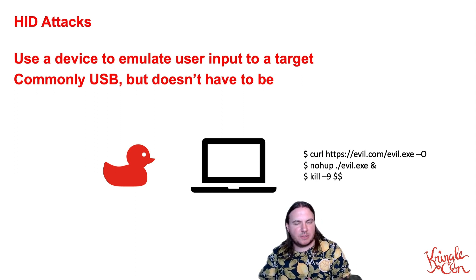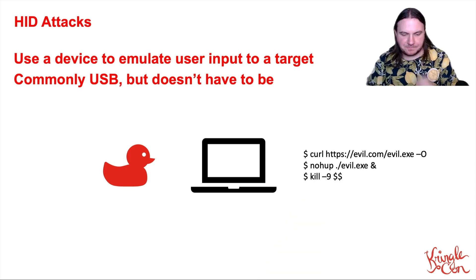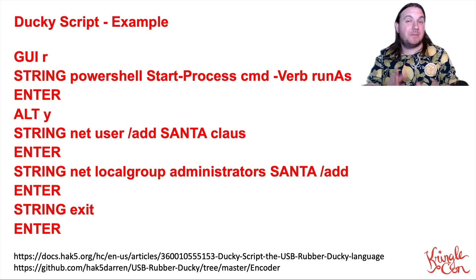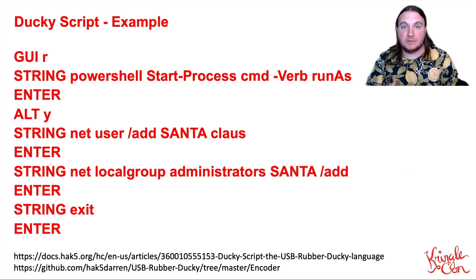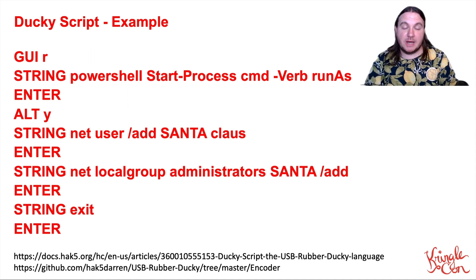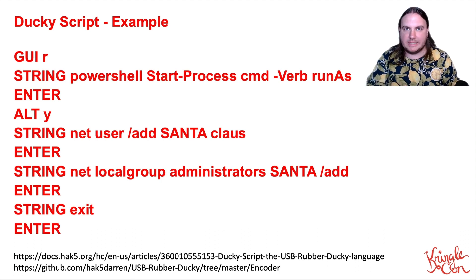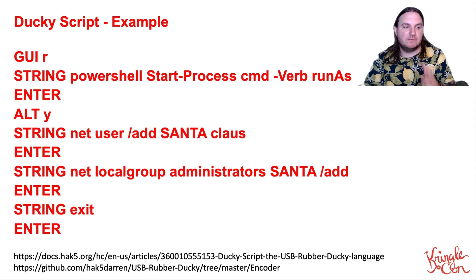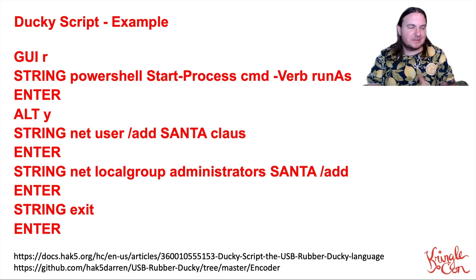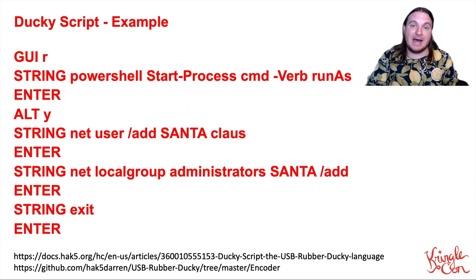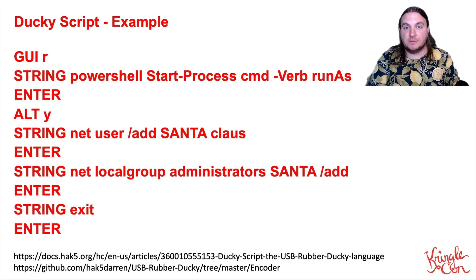Let's take a look at ducky script briefly so you can get an idea of some of the things you can do with HID attacks. We'll come back to this example towards the end of the talk as we demonstrate how to decode these ducky scripts. In this case, we're typing GUI R which brings up a run prompt, we type in PowerShell and do a run-as to try to run as administrator, and do Alt Y to bypass the prompt. Then we're adding a user — Santa with the password of Kloss — to the machine, and adding Santa to the administrators group. We exit out, and we've been able to add a user to this machine. There are links at the bottom with documentation about the ducky script language for writing these payloads.